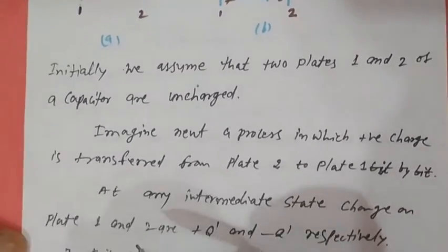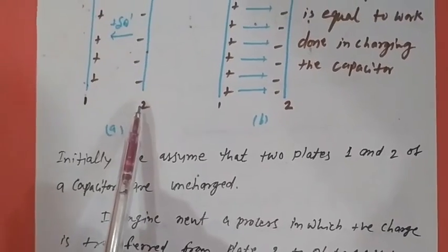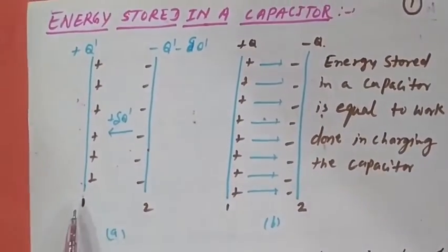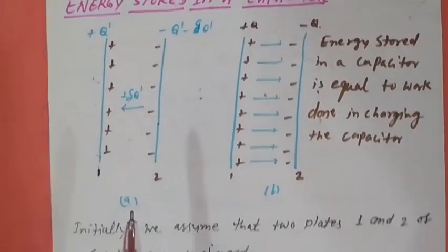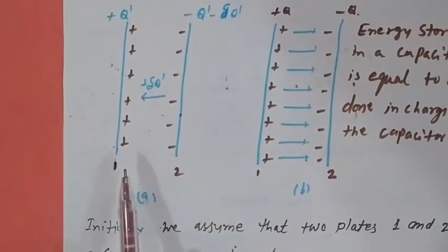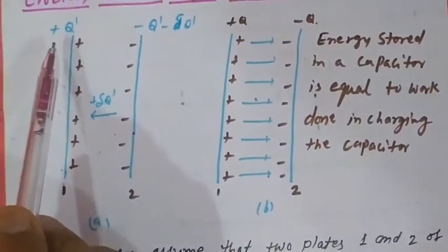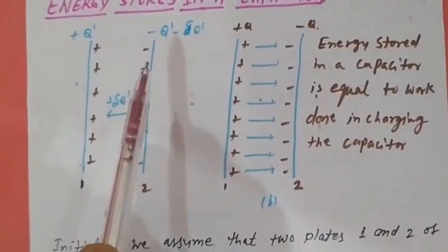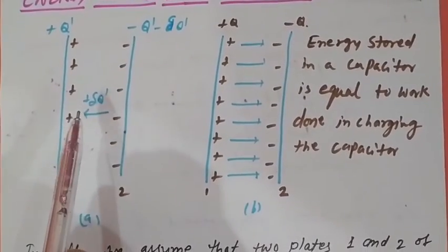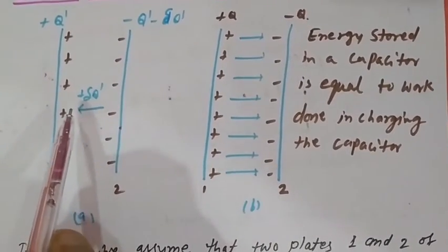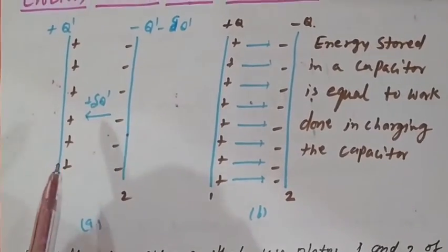When we transfer the charge from plate 2 to plate 1 bit by bit, at any intermediate position when charge Q' is present on plate 1 and minus Q' is present on plate 2, we transfer a small positive charge delta Q' from plate 2 to plate 1.